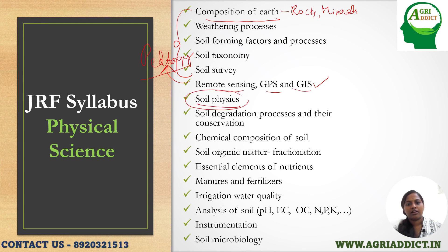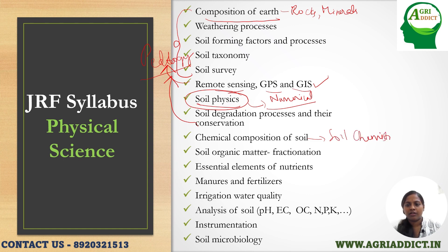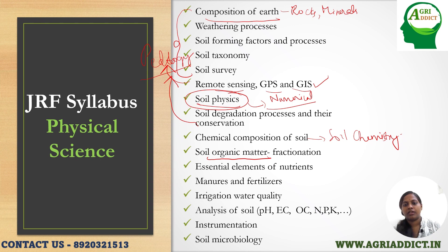The second head is soil physics, or agricultural physics. From this, you can expect at least one numerical in each paper, so be thorough with all the formulas associated with the soil physics chapter. This is followed by soil degradation processes and conservation, which also comes under pedology. Then the chemical composition of soil — elemental composition and mineralogical composition including oxygen, silicon, and aluminum. Soil organic matter fractionation, the components of organic matter, how to fractionate it, and the properties associated with each component are covered under soil biology.